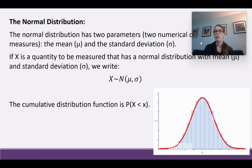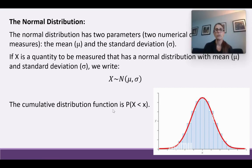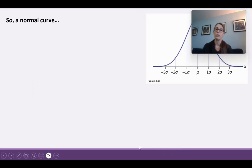The cumulative distribution function is P(X < x) — the capital X is the random variable described in words, and the little x is the values it can take on. The graph with little bars shows what happens as you go to infinity — the bars get smaller and smaller, looking a lot like a binomial or discrete distribution, showing the connection between the two.